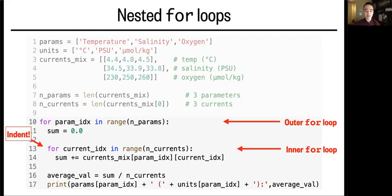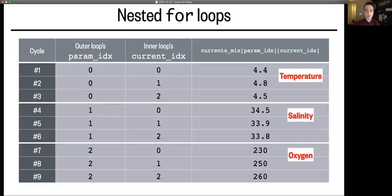I'll show it to you in a bit of a different way here. So breaking this down by the loop cycles. On the very first cycle, the outer loop's param_idx is zero, and the inner loop's current_idx is also zero.